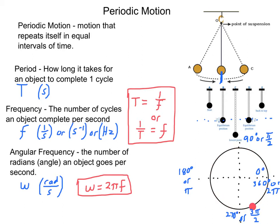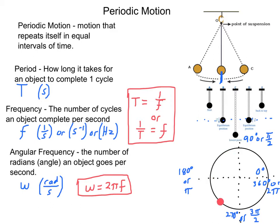So angular frequency is the number of radians — how many radians of angle an object covers in one second. The equation to calculate that: omega — the Greek letter omega, which looks kind of like a w — equals 2 pi times the frequency.